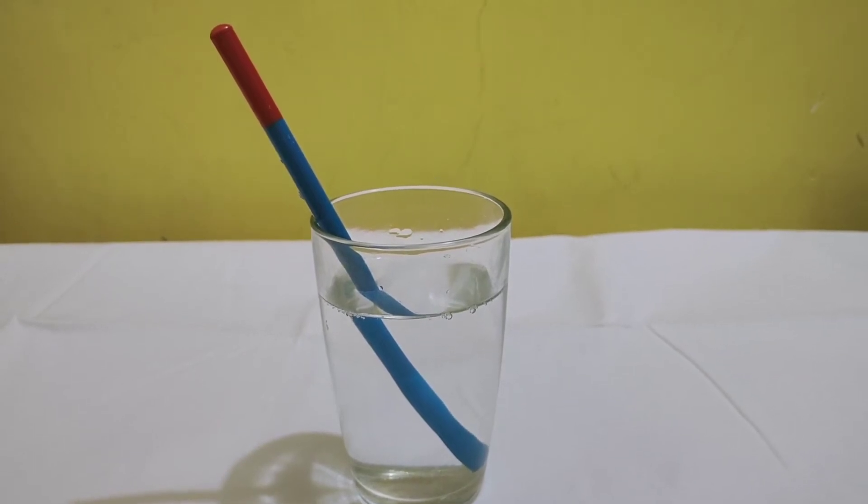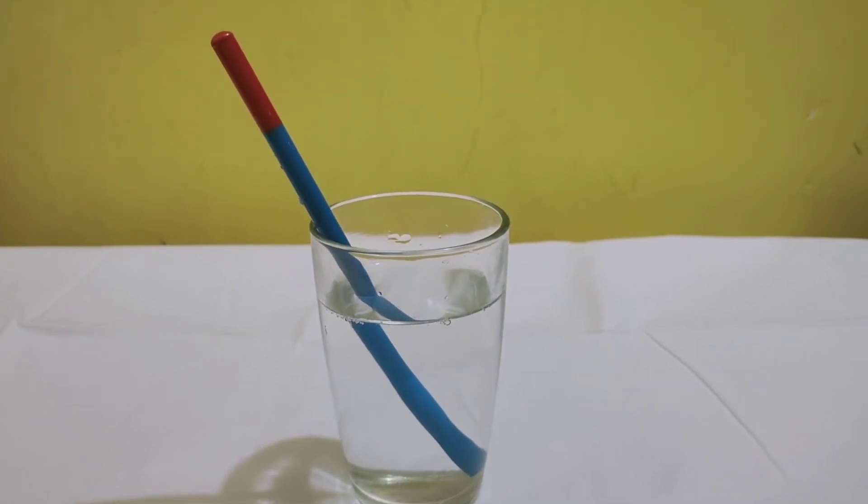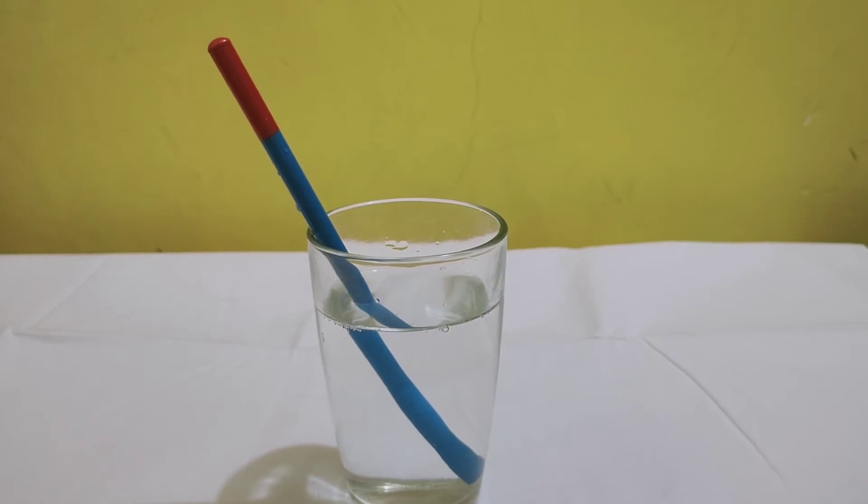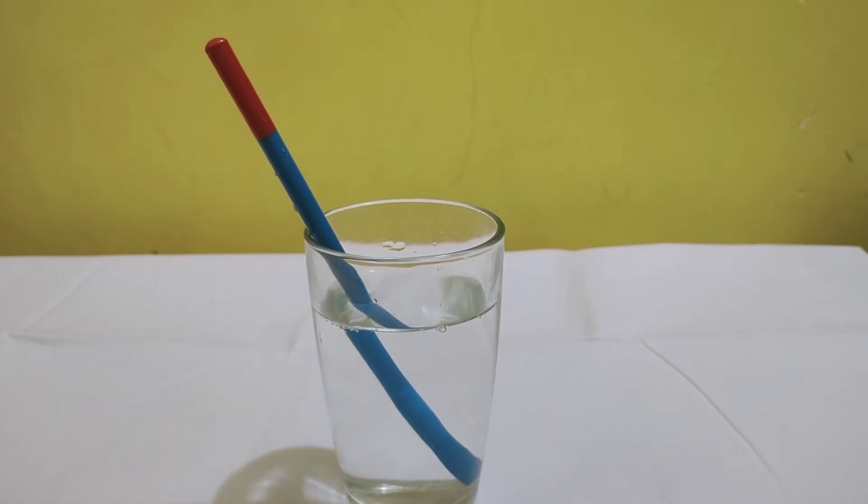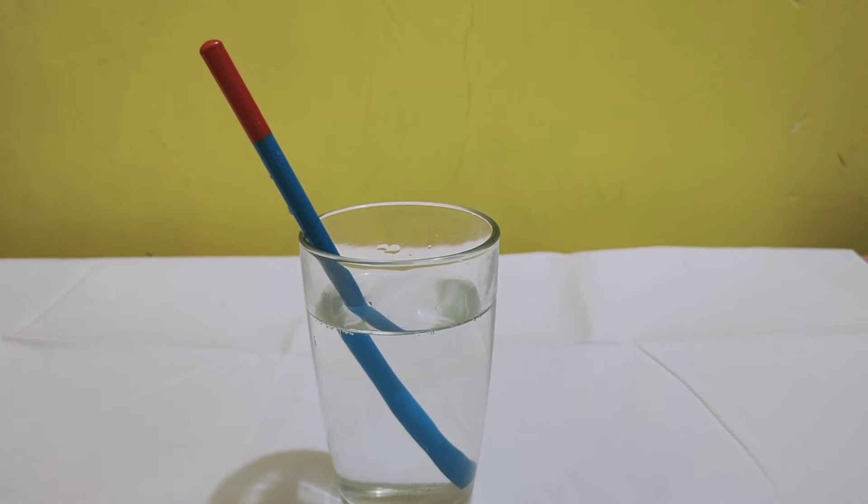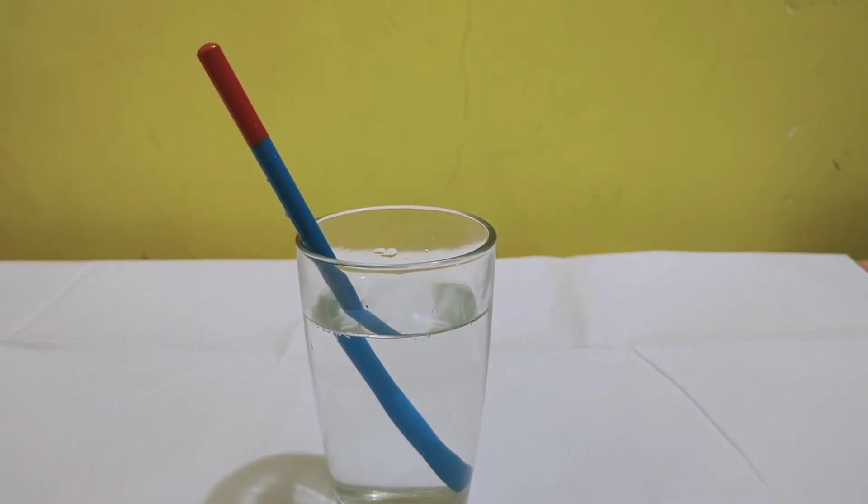Now look at the pencil through the beaker. Does it appear straight? No. It will appear to be bent at the surface of the water.